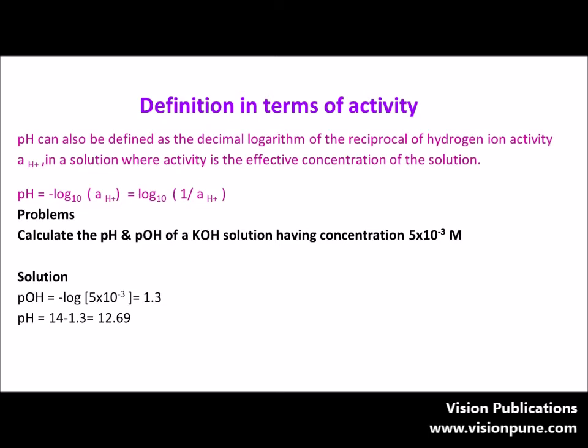So what will be the pH value? The total pOH plus pH is equal to 14. Therefore, pH will be 14 minus 1.3, which is 12.7. So the pH of this KOH solution is 12.7.